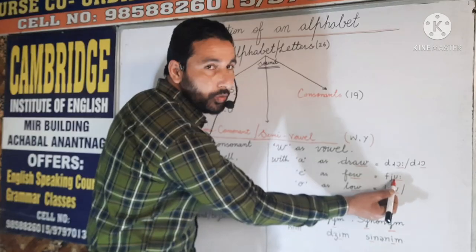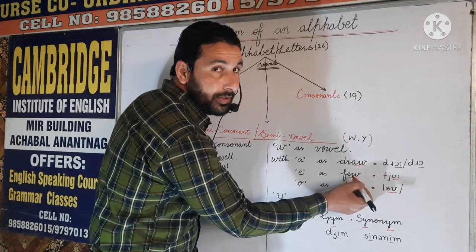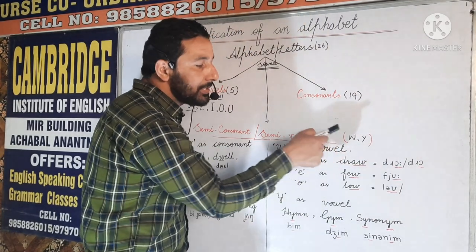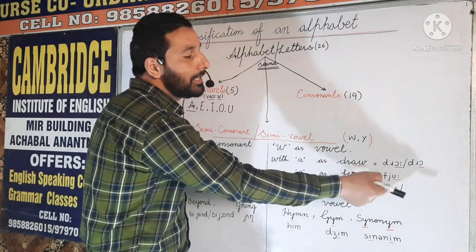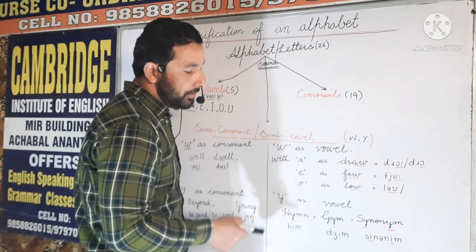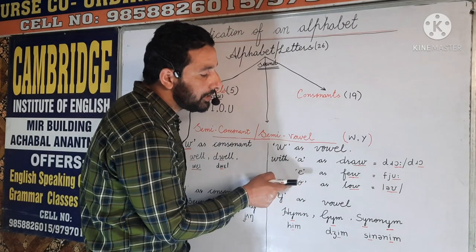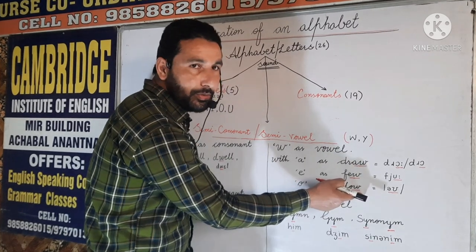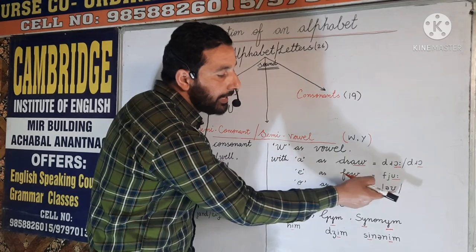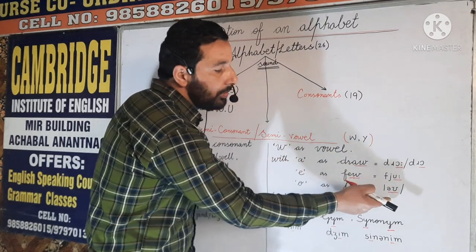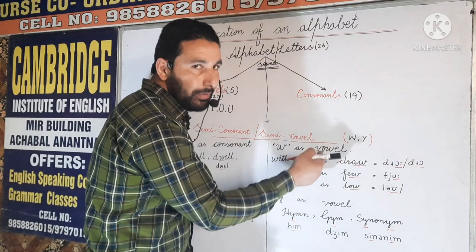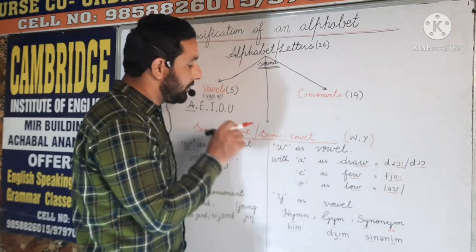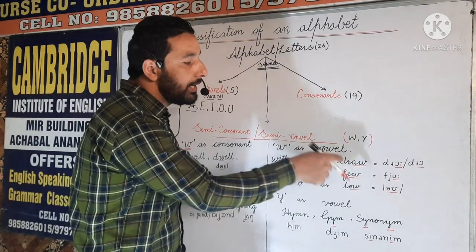When W is in combination with O — for example 'low' — it has again the pronunciation /oʊ/. The O sound is again considered a vowel sound in phonetics. I hope you have understood where W is considered a consonant and where W is considered a vowel.